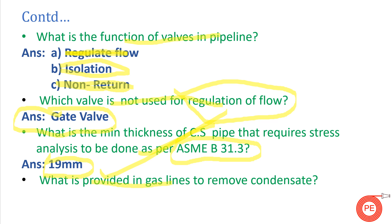What is provided in gas lines to remove condensate? In gas lines, there is moisture that flows with the gas, and it has to be removed because if it reaches a burner or equipment it may damage the equipment. This moisture or condensate is removed with the help of drip pots. This is an important question — people also ask what a drip pot is and what a steam trap is, so you should know these.